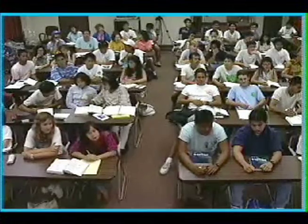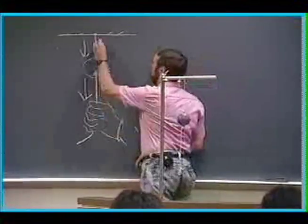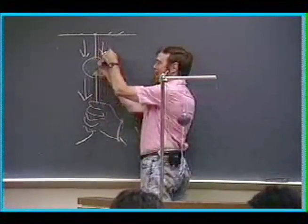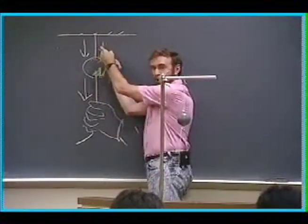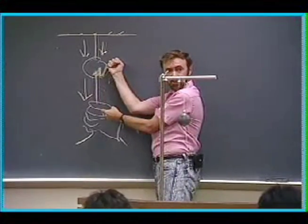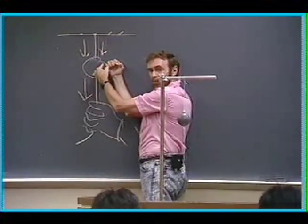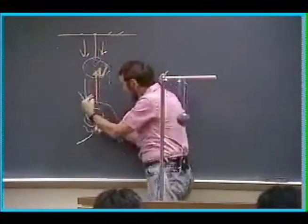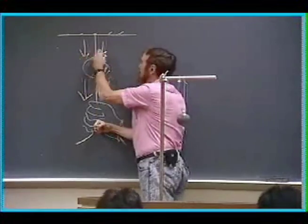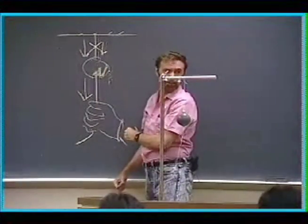Why did the top string break? Because the weight of the ball is acting up here too. So the weight of the ball pulls on the top — the weight doesn't act on the bottom string. So I've got the weight of the ball pulling on the top string and the tension with which I pull on the top string — both these — boom, it breaks.